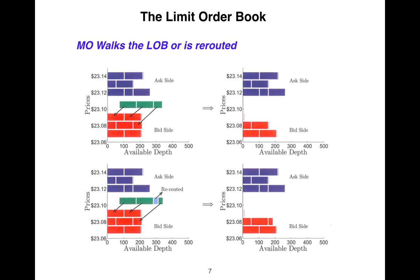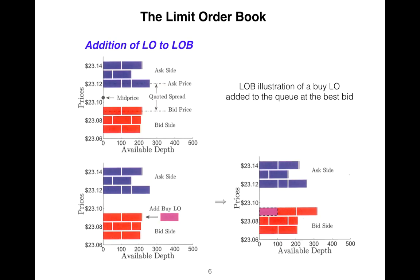Let's talk about when a market order walks the LOB or is rerouted. I want to point to the addition of a limit to the LOB in detail. Limit orders are ordered in terms of time priority from right to left. When a new buy limit order comes in at $23.9 — as you see, it is the purple block in the bottom panel — this new limit order joins the queue at the point closest to the y-axis, becoming the third limit order waiting to be executed at $23.9.